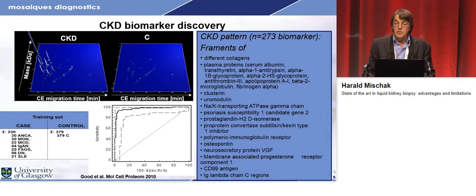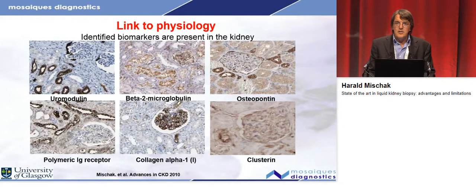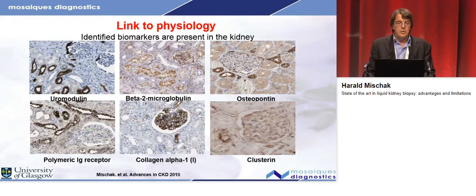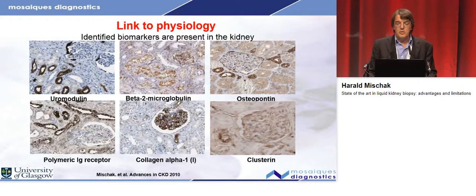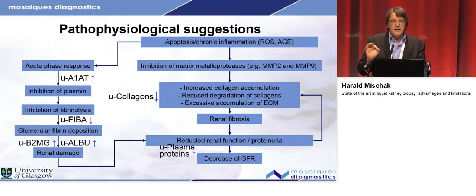Combining all of these peptides — 273 — into a classifier enabled very accurate assessment of kidney disease, as shown on this ROC curve. These biomarkers are linked at least to physiology. Basically all of these proteins can be found in the kidney. We find plenty of collagen alpha-1 in the glomerulum, plenty of osteopontin in the kidney, and plenty of polymeric immunoglobulin receptor, and so on. So there is a very good chance that all of these proteins and peptides described as biomarkers for CKD may originate from the kidney, and they can be associated with pathophysiology.